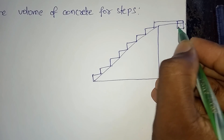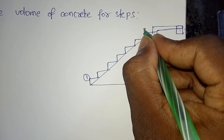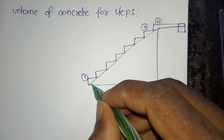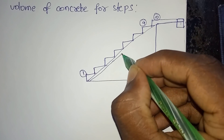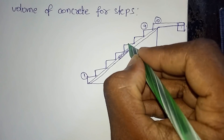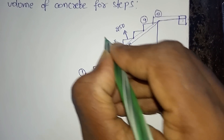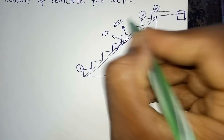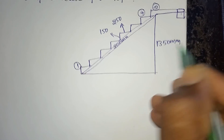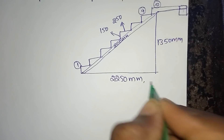Here the beam. 1 to 9 is the 10th step and here the waist is there. This is 200 mm, thread is 250 and rise is 150 mm, and this is 1350 mm and this is 2250 mm.